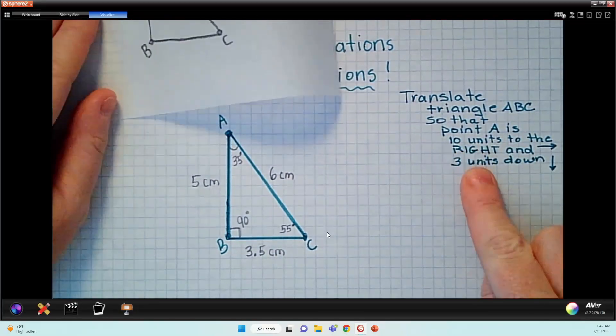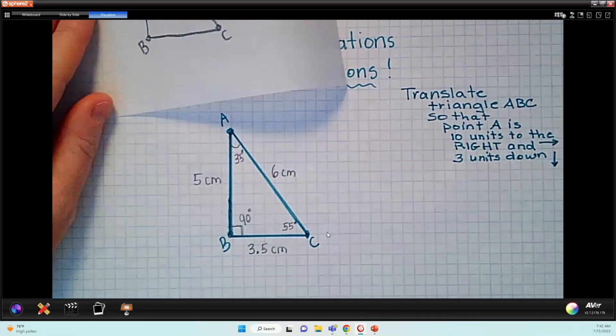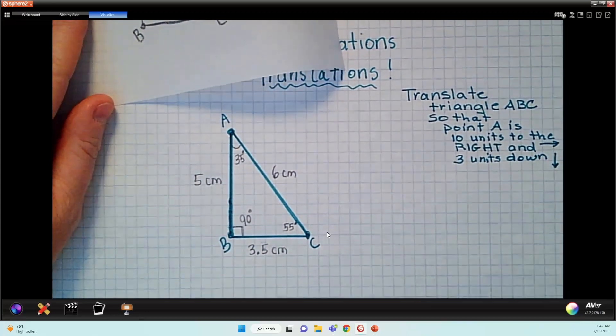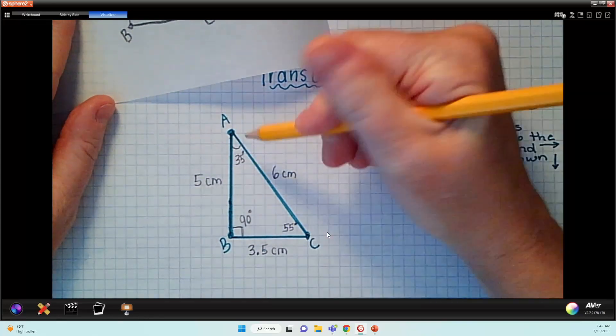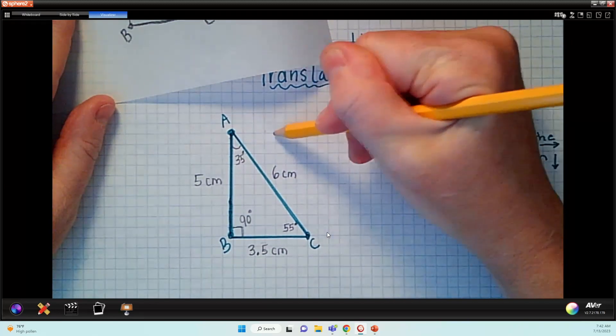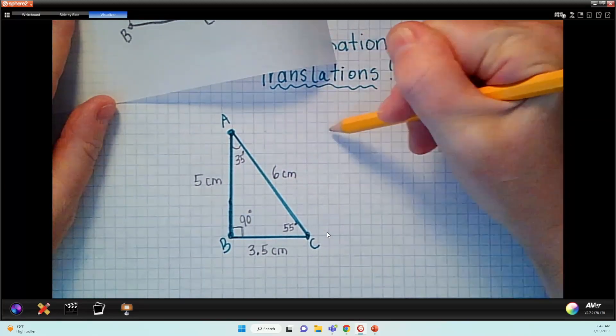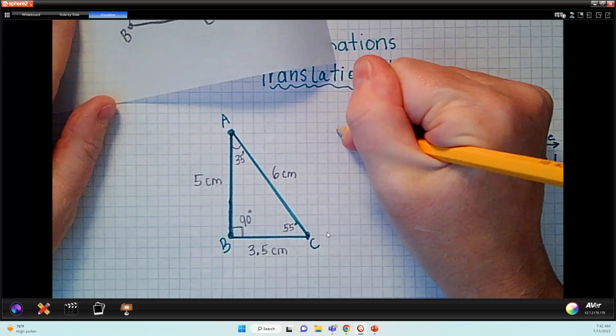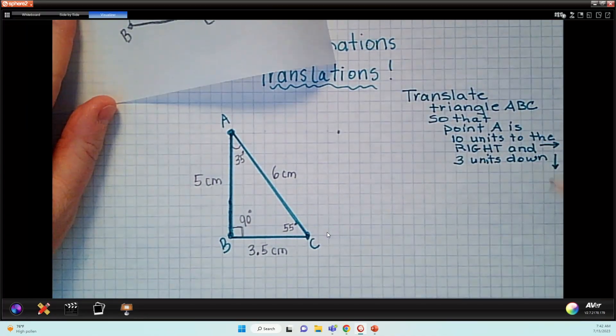I'm going to take my pencil and I'm going to mark those locations. So I have to go 10 units to the right: 1, 2, 3, 4, 5, 6, 7, 8, 9, 10. And I'm going to put like a little marker there.